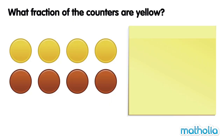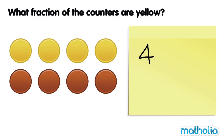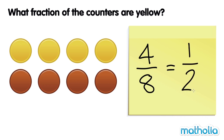What fraction of the counters are yellow? There are one, two, three, four yellow counters. There are eight counters altogether. We can write the fraction of yellow counters as four over eight, or four eighths. We can simplify four eighths to one half. So we can say one half of the counters are yellow.